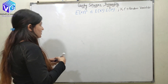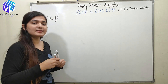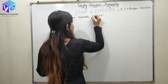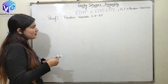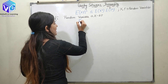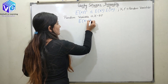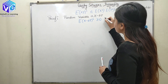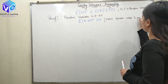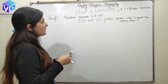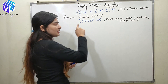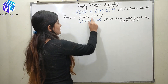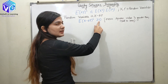Now, if I have to prove this Cauchy-Schwarz's inequality, I will be considering a random variable: the random variable X minus aY. When I talk about this random variable, I know the expectation of a random variable squared is greater than or equal to 0. The mean square value is always greater than or equal to 0. The expectation E represents the mean, and this is the square — so the mean square of this random variable X minus aY is greater than or equal to 0.